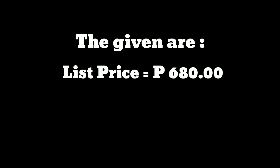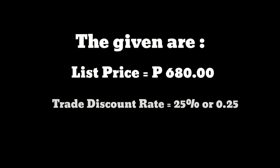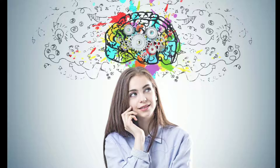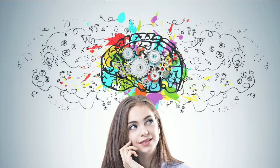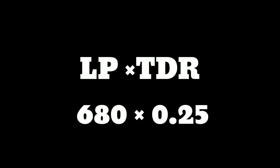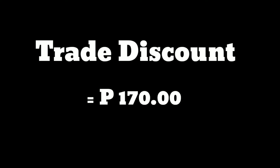Here is the solution. The given are: the list price which is P680, and the trade discount rate which is 25% or 0.25. Before we solve the net price, we must first solve the trade discount. Using the formula TD = LP × TDR, substituting the given: P680 × 0.25. The amount of the trade discount is P170.